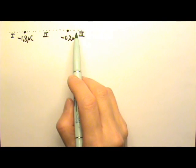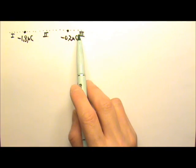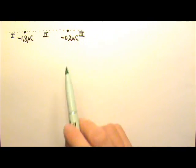So region 1, 2, 3. Which of these three regions on the line do you think Q3 should be placed?